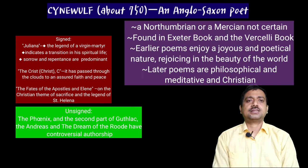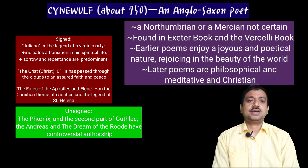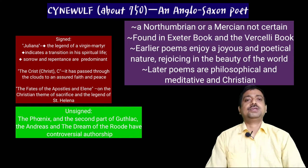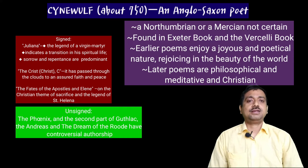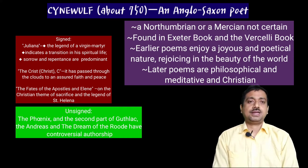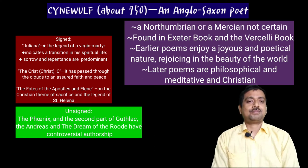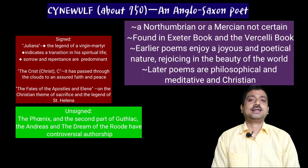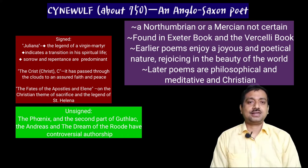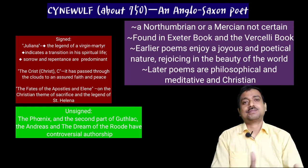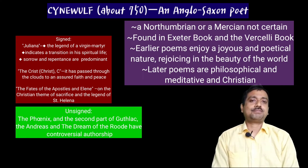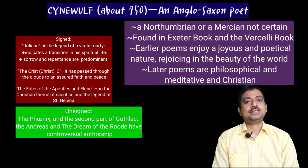The signed poem Juliana is one of his beautiful poems — the legend of a virgin martyr — and it indicates a transition in Cynewulf's spiritual life. Sorrow and repentance are predominant notes in this religious text, where the devotional journey of the poet is stated. The Christ is another poem, whose beautiful text tells that it has passed through the clouds to an assured faith and peace — his journey from clouds of doubt towards faith and peace. The Fates of the Apostles and Elene are also on Christian themes of sacrifice and the legend of Saint Helena.